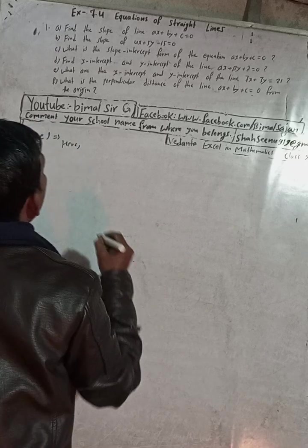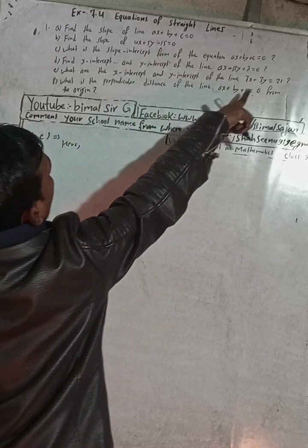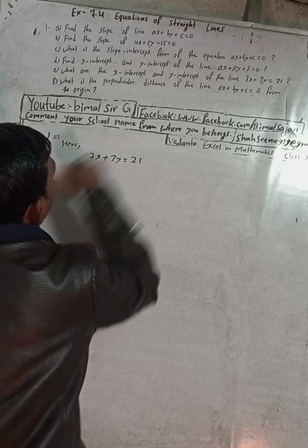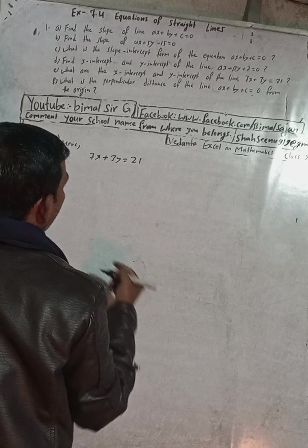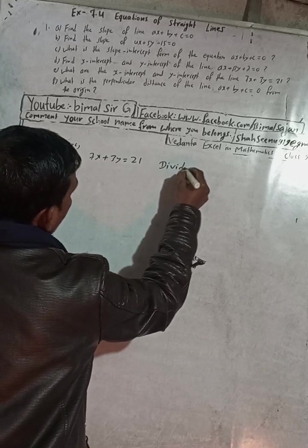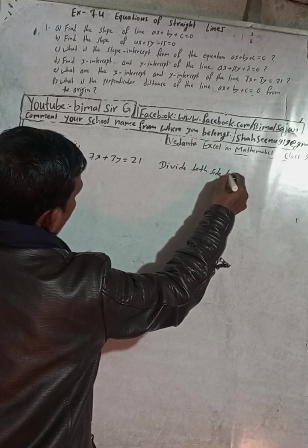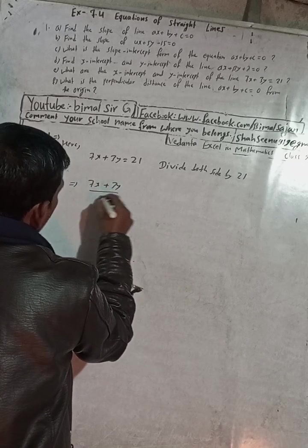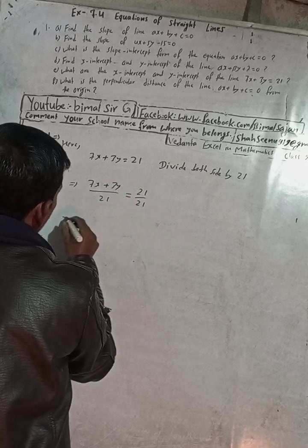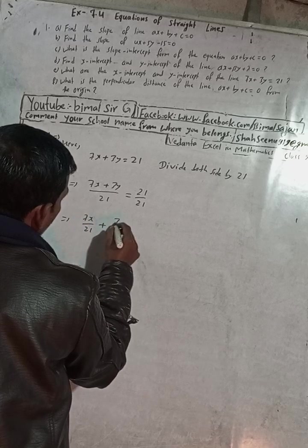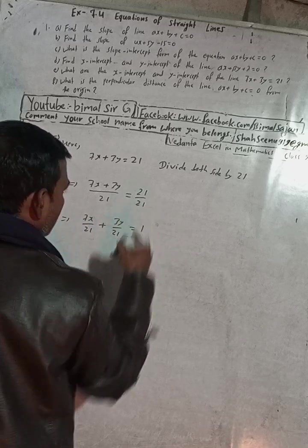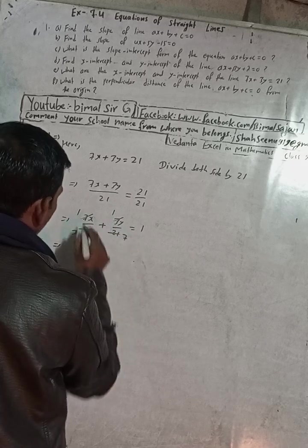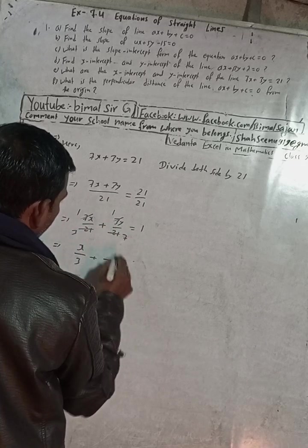Part (e): find the x-intercept and y-intercept of the line 7x + 3y = 21. Divide both sides by 21: 7x/21 + 3y/21 = 1, which simplifies to x/3 + y/7 = 1.